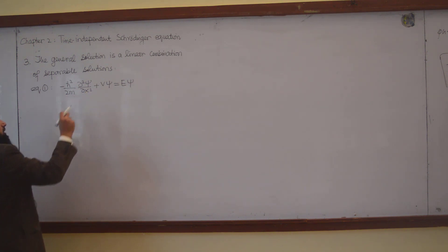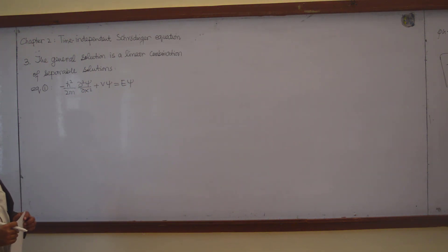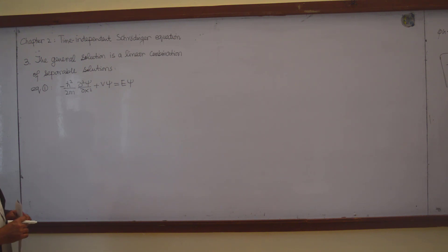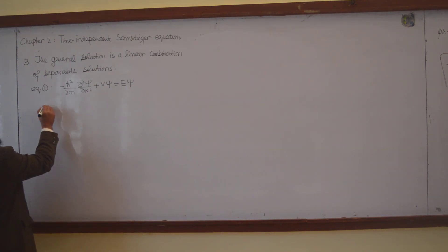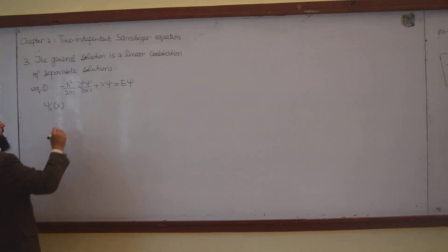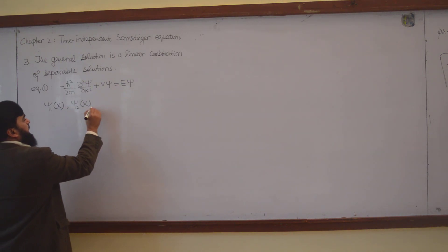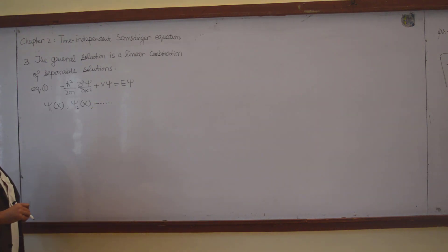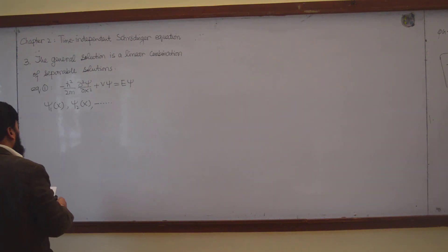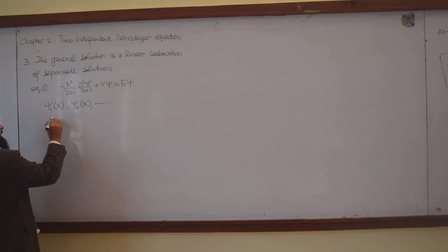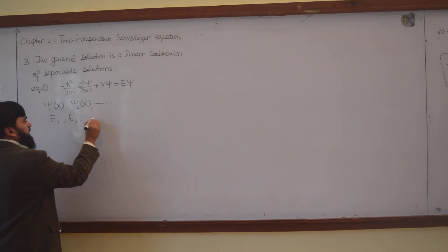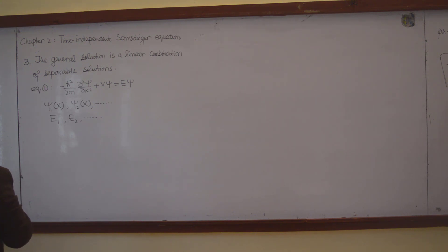This is a second-order differential equation, which normally has two solutions, but here you will find there are more. There may be solutions ψ₁(x), ψ₂(x), and so on. Each solution possesses its own energy: ψ₁ has energy E₁, ψ₂ has energy E₂, and so on.